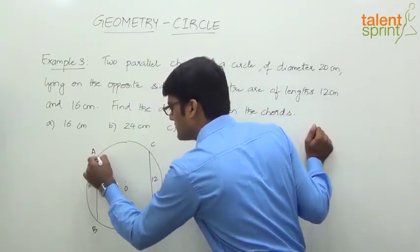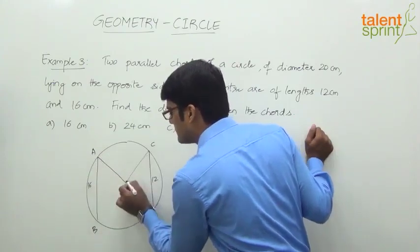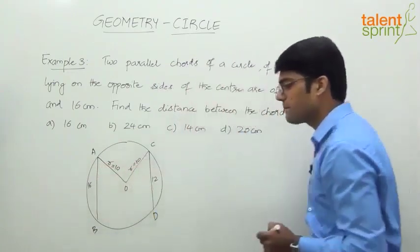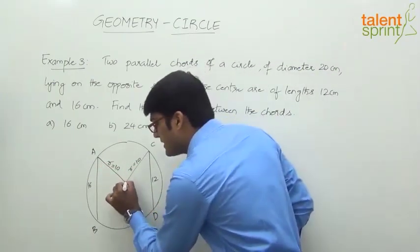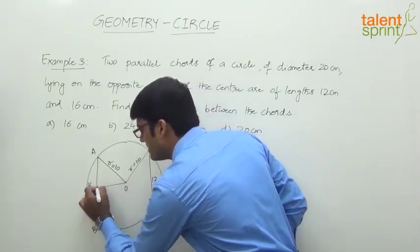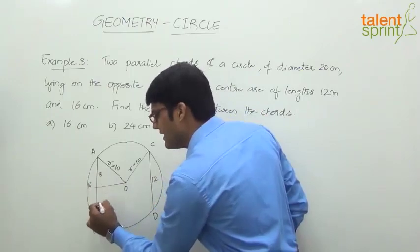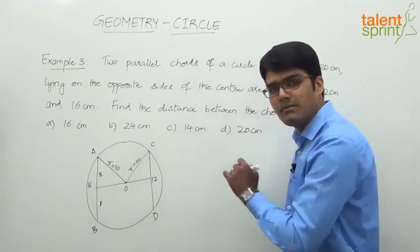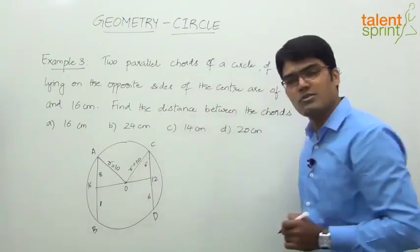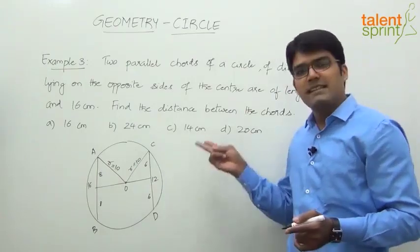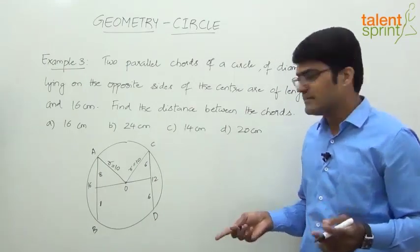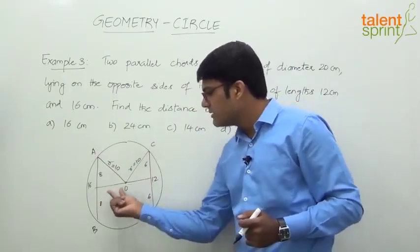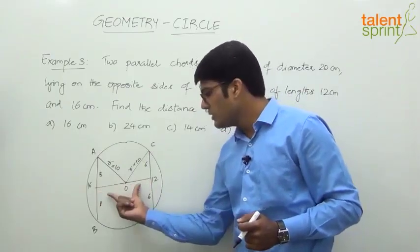This is the center O of the circle. Let's connect AO and CO — both are radii of length 10. We know that from the center of the circle, if we draw a perpendicular to a chord, it will bisect it. So the perpendicular from O to AB gives two halves of 8 centimeters each (since AB = 16). Similarly, the perpendicular from O to CD gives two halves of 6 centimeters each (since CD = 12). We know the radius is 10, the half-chord lengths are 8 and 6.